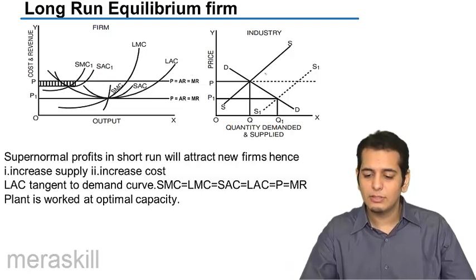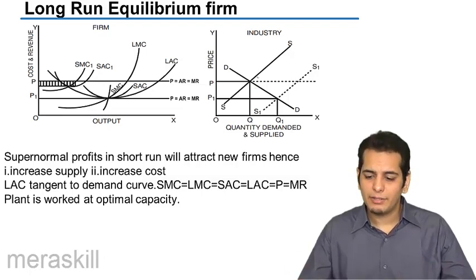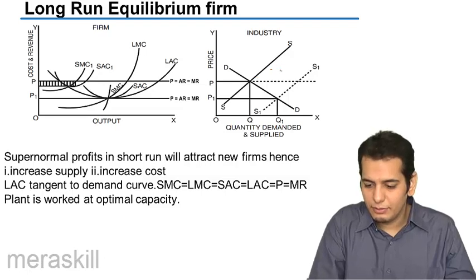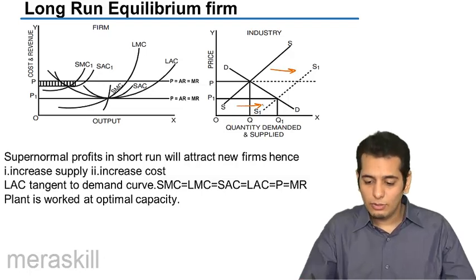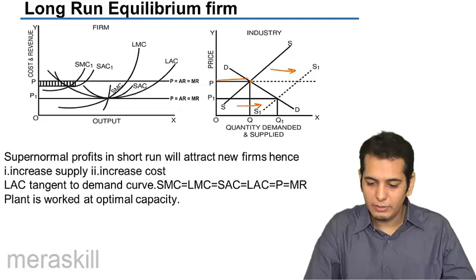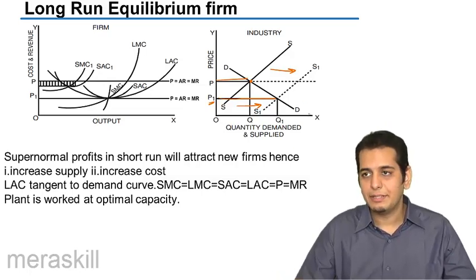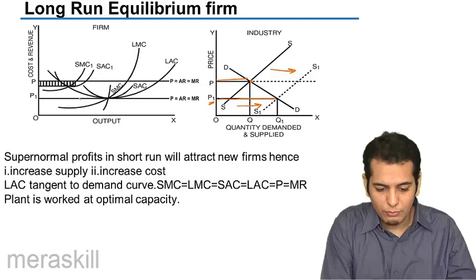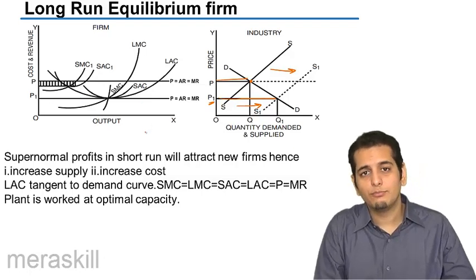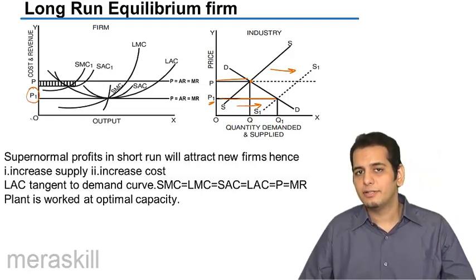When they try to enter the market, suddenly the supply in the market increases. The earlier price set by the market was P; now the equilibrium price would be P1, which is set by the new supply curve S1S1 and the demand curve D. Since the firm is a price taker, P1 is the new price that it accepts.